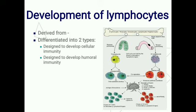Hello everyone, let us continue our discussion regarding immunity. Today we discuss about development of lymphocytes. Lymphocytes are derived from bone marrow from lymphoid stem cells. They are differentiated into two types: one, those designed to develop cellular immunity — they migrate to the thymus and are pre-processed there, and they are T lymphocytes.